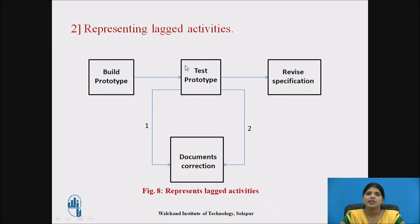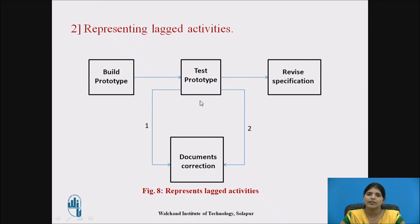Next is representing lagged activities. Here, test prototype and document corrections are two parallel activities. The value '1' indicates that document corrections can start one day after the start of the prototype, and '2' indicates that document correction has been completed two days after the test prototyping is completed. These two activities are lagged.